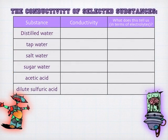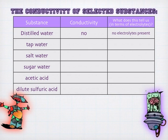We can look at several solutions and look for conductivity — look for electrolytes. Distilled water doesn't have any electrolytes, so it shouldn't conduct. Water does auto-ionize to a very small degree, but you're not really going to see much conductivity in distilled water.